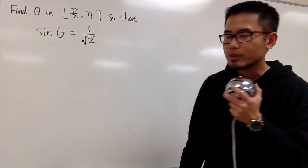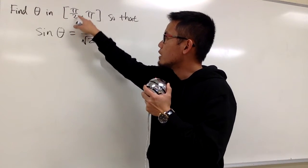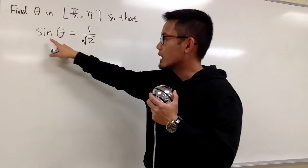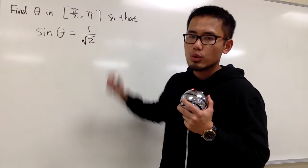Here we're going to find the angle theta so that theta is between pi over 2 and pi, and we also want to have sine of theta equal to 1 over square root of 2.